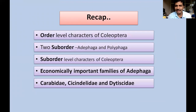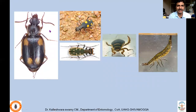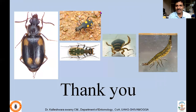In lecture 13a we discussed the order-level characters of Coleoptera, its two major sub-orders Adephaga and Polyphaga — there are four sub-orders in total, but I concentrated on these two — along with the distinguishing characters of Adephaga and Polyphaga, and the economically important families of Adephaga: Carabidae (ground beetles), Cicindelidae (tiger beetles), and Dytiscidae (predaceous diving beetles). If there are any questions, you can post below or email me. Thank you very much.